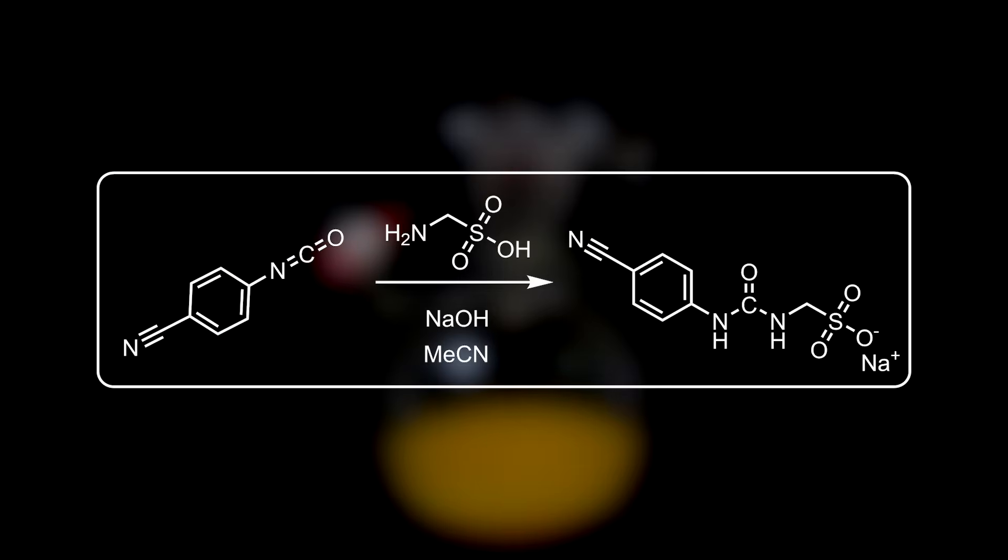In this reaction, the amine of 4-aminomethanesulfonate reacts with the isocyanate to form the urea product. The reaction proceeds first through nucleophilic attack of the amine onto the electron-deficient carbon of the isocyanate, moving a pair of carbonyl bond electrons onto the oxygen. This amine then deprotonates the other amine while the carbonyl double bond reforms, and a pair of bond electrons from the carbon-nitrogen double bond moves onto the nitrogen, giving the final urea product.